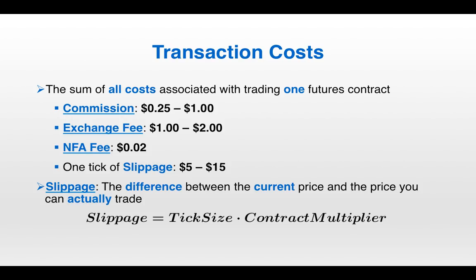Slippage is the difference between the current price and the price you can actually trade at. Assuming one tick of slippage is usually fair if you're trading a fairly liquid futures market without enormous size. The formula is: multiply the tick size by the contract multiplier. For example, crude oil has a contract multiplier of 1,000 barrels and a tick size of one cent, so one tick of slippage in crude oil is $10.